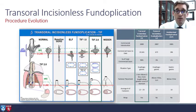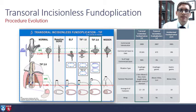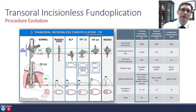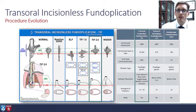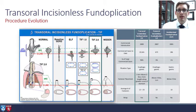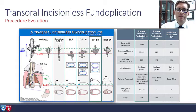This procedure has evolved over time. Originally it was called the ELF procedure, with the Z line of the esophagus right in the high pressure zone. The gold standard Nissen shows increased pressure in the high pressure zone. The original ELF procedure had a high pressure zone but it was much lower and deeper into the stomach. With TIF-1 it improved, and with TIF-2 — the current procedure — it looks much more like a Nissen fundoplication, augmenting that high pressure zone.